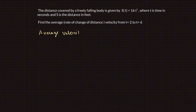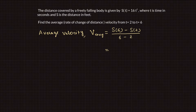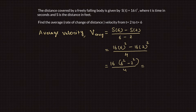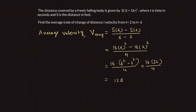s of 6 is obtained by plugging in t equals 6 in the expression s of t equals 16t squared. By taking 16 as a common factor we can write this as 16 times 6 squared minus 2 squared divided by 4, which is 16 times 32 divided by 4, giving 128 feet per second.